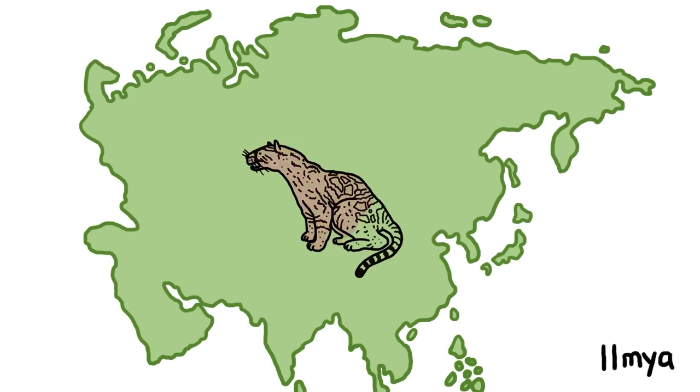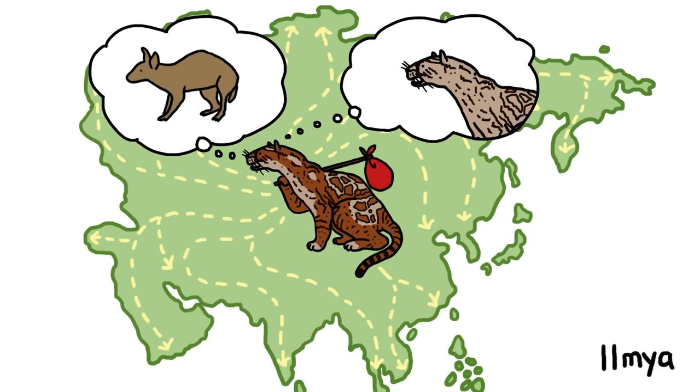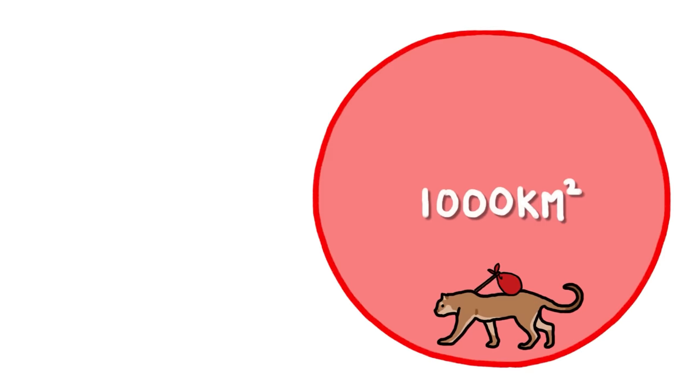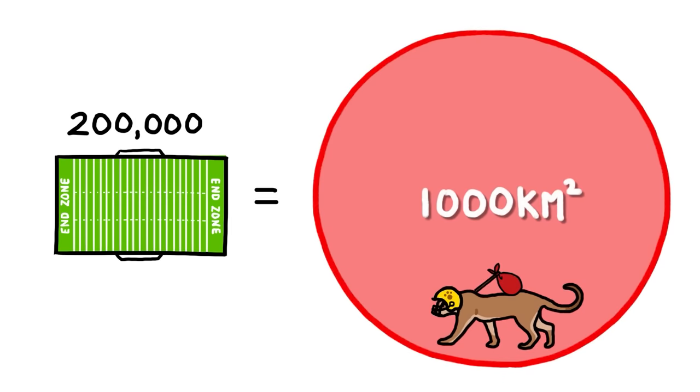It all started around 11 million years ago in Asia, with a cat that looked something like this. We think this ancestor of modern cats traveled far and wide in search of food and mates, an instinct shared across the feline family.